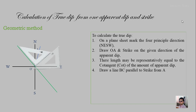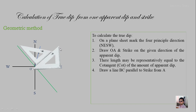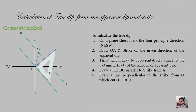Next, draw BC parallel to the strike such that it cuts point A. To draw parallel lines, use two set squares: keep the first set square parallel to the strike direction, keep the second set square as a base, and slide the first set square along the base — the same trick used in map classes. Then draw a perpendicular line from O to the strike; this line should cut BC at point D. Since the set square gives a 90-degree angle and the strike-dip relationship is also 90 degrees, this gives the dip direction.